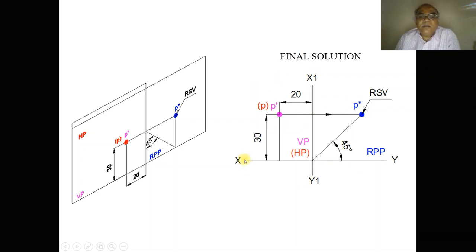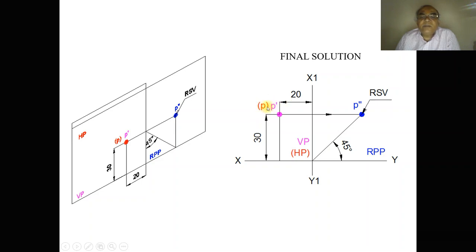For the final solution: first draw the XY line and X1Y1 line, then mark XY and X1Y1 and identify the planes VP, HP, and RPP. Draw a parallel line to X1Y1 at a distance of 20 mm — since behind RPP is seen in both VP and HP. From the XY line measure 30 mm and mark this point as p-dash (bracket p), because HP is the one that is rotated and both will overlap. Draw a 45-degree line adjacent to HP and project the top view point onto the 45-degree line.